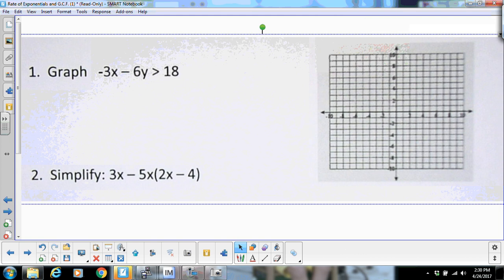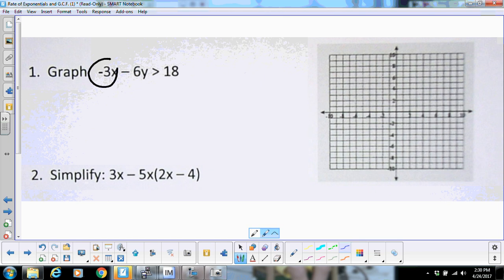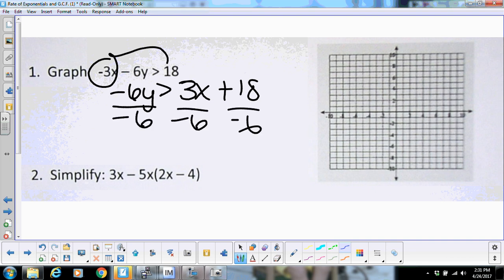Alright, so looking into some of your homework problems tonight on problem number one. I'm going to start by getting y by itself, so I'm going to move my 3x and then divide by negative 6. Remember, when you divide by a negative, you have to flip your sign, so it's going to be less than negative 1 half x minus 3.